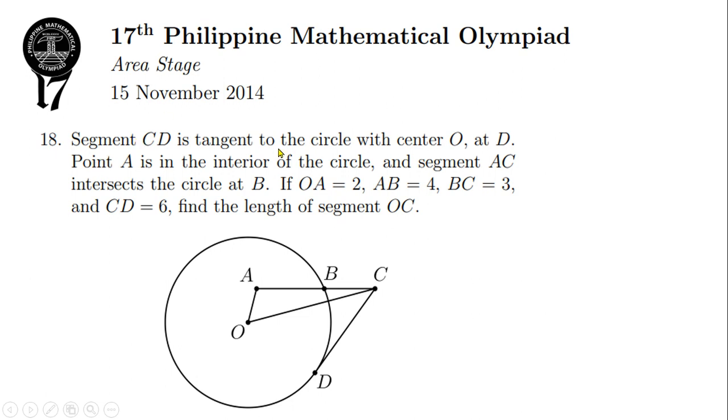Segment CD is tangent to the circle with center O at point D. Point A is in the interior of the circle and segment AC intersects the circle at point B. If OA equals 2, AB equals 4, BC equals 3, and CD equals 6, find the length of segment OC.